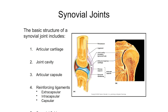All synovial joints also have reinforcing ligaments, of which there are three types. Extracapsular reinforcing ligaments are bands of collagen fibers — stronger than steel of the same size — located outside the joint cavity, connecting the bones and stabilizing the joint. A few joints, like the knee, also have intracapsular ligaments, which are inside the joint capsule, physically attaching bones together within the joint cavity. The ACL and PCL are familiar examples of intracapsular ligaments, commonly torn injuries.